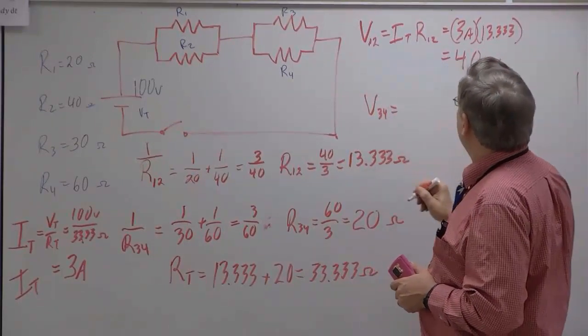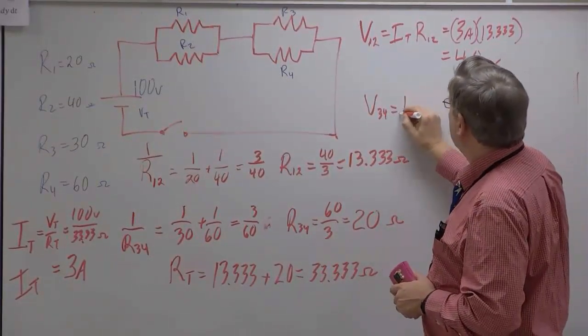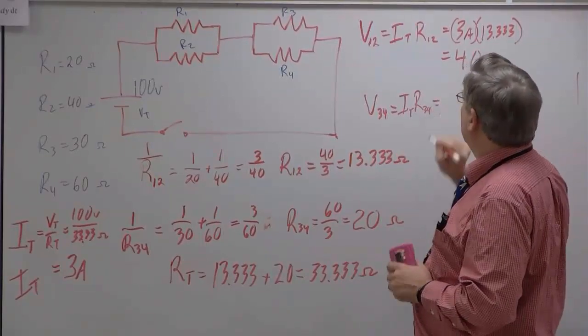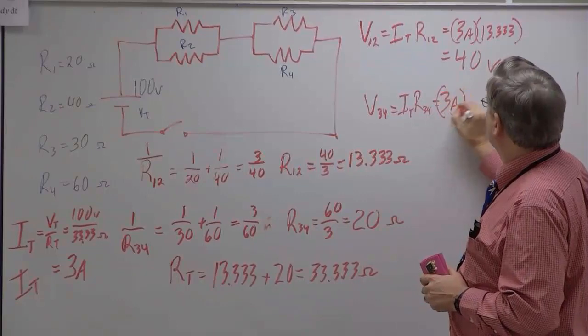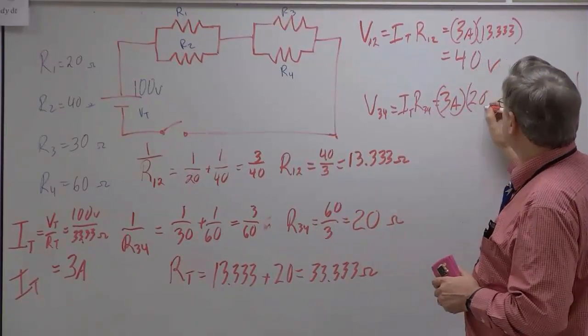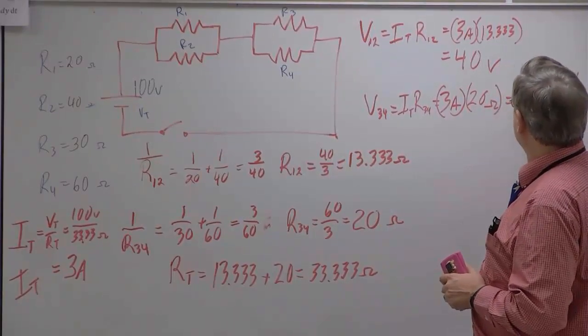V34 is going to be equal to, well, if that's 100 volts, we know this is going to be 60 volts, but let's go on and prove it. Okay. IT times R34, and that's going to be equal to 3 amps times our 20 volts, or pardon me, 20 ohms, which is equal to 60 volts.